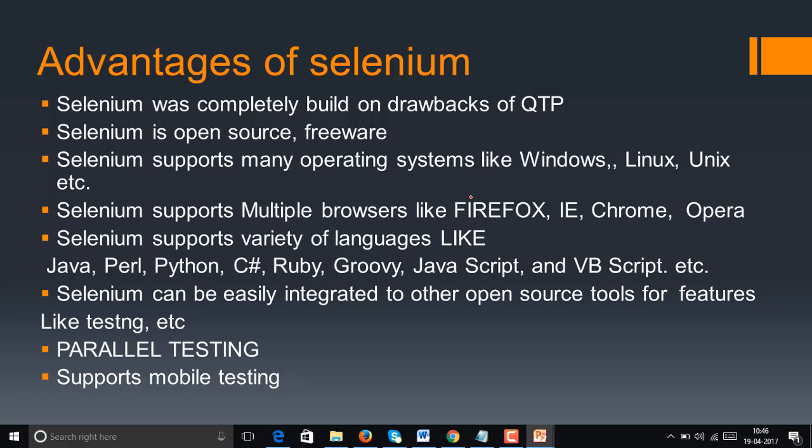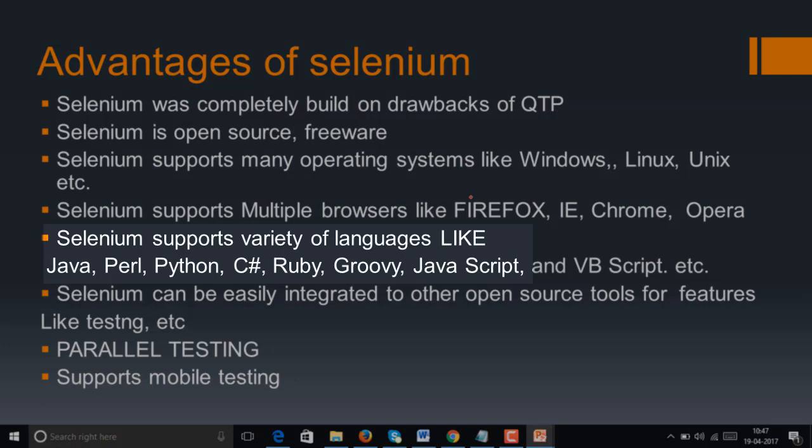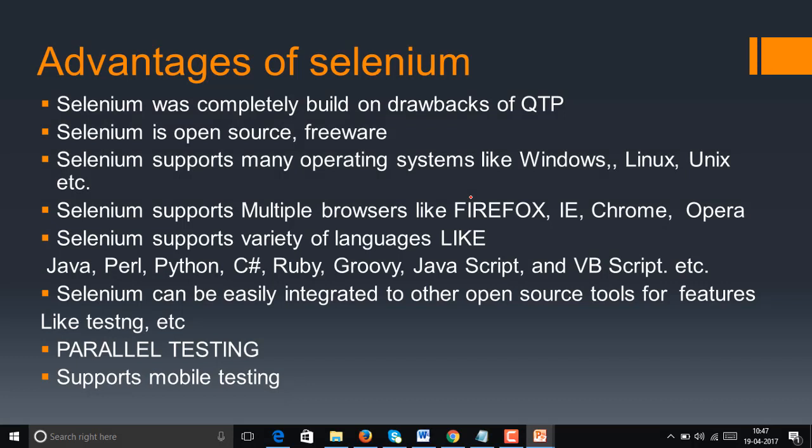A very important advantage is that Selenium understands multiple languages. No tool in the world understands human language — we write code for the tool to understand. Selenium does not force you to learn a particular language. Unlike QTP, which requires VB script, in Selenium you can write your script in Java, Python, or Ruby — it supports all of them.